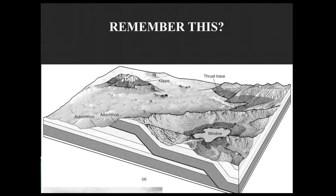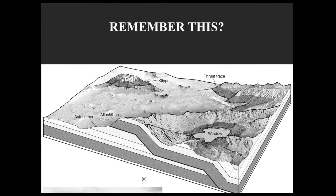So this rock is the same as this rock over here on the right. This here is the underlying bedrock, same as in this window. And here we can see it in the cross-section on the side of this block diagram. Now, easier than calling it the underlying bedrock and the overriding plate and the thrust plate, we have these two terms: allochthon and autochthon.